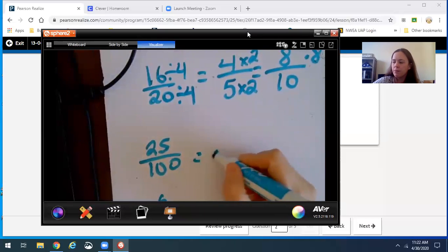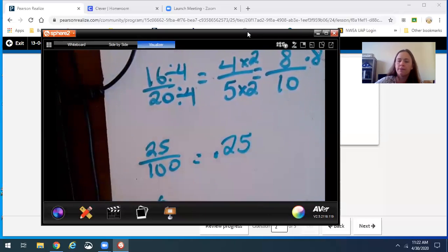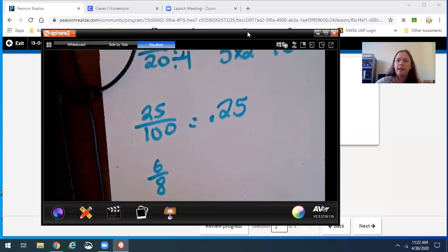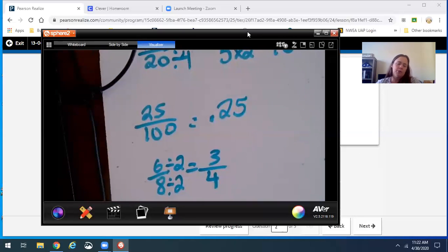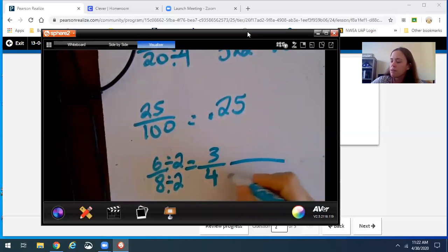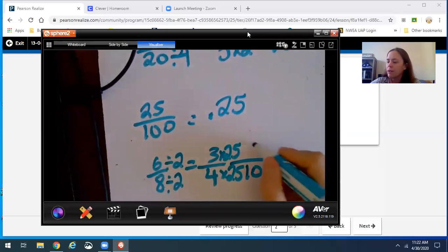25 hundredths would be .25, that should be easy. 6 eighths, I would probably do the same thing. I can take a 2 out of both of these. Something you're going to learn is that whenever you see 3 fourths, it's going to always equal .75, but if you don't know why, you can do the steps. You can have 100, 4 times 25 is 100, 3 times 25, it's like having 3 quarters, equals 75 cents. This is .75.